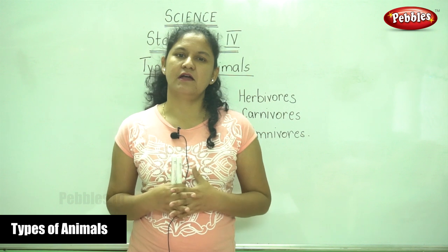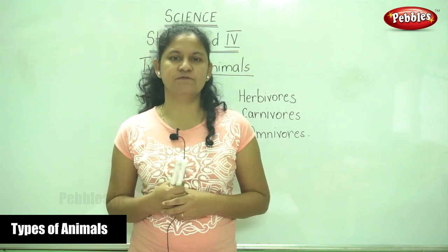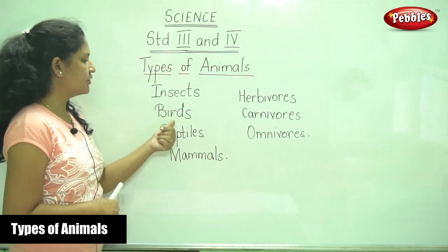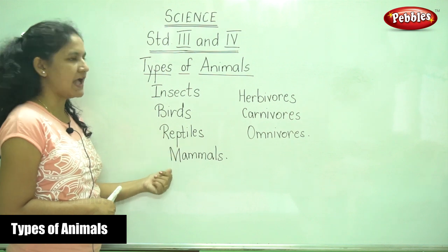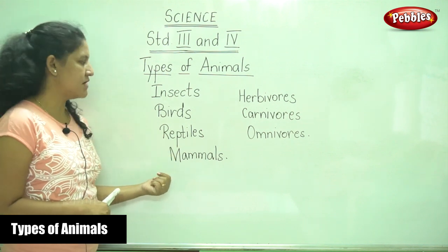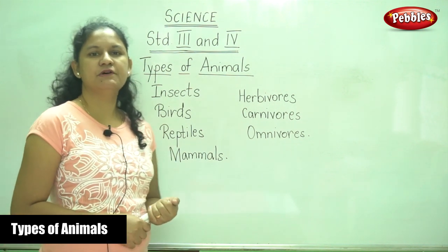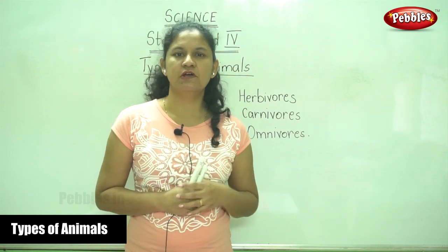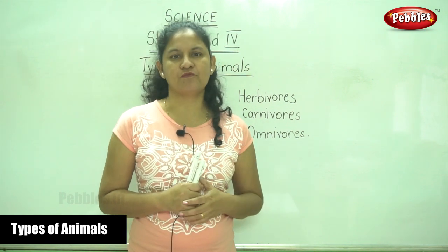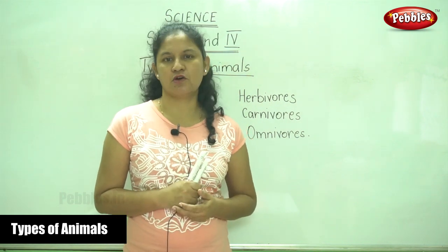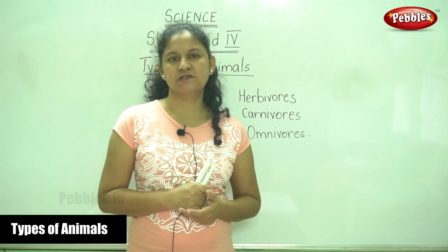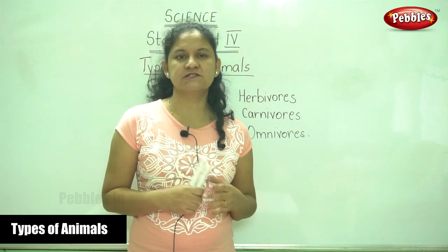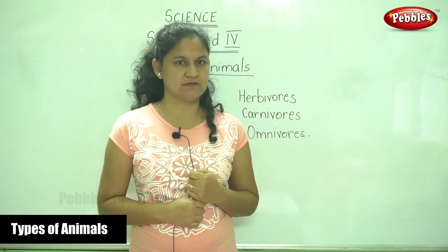There are different types of animals: insects, birds, reptiles, and mammals. Birds can be differentiated according to the type of beak and their claws. Birds also help plants and humans as well.